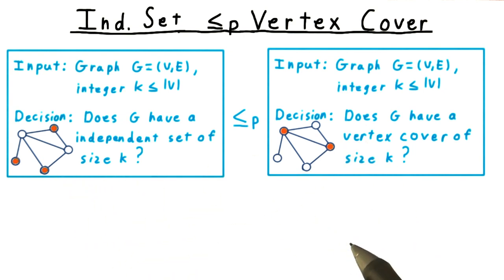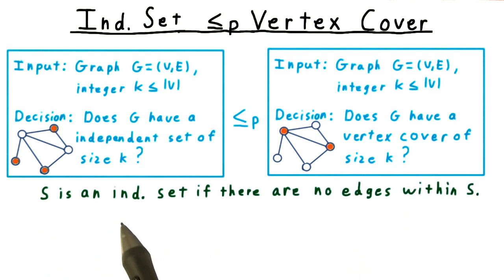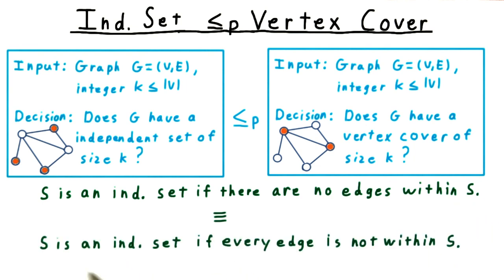Let's see if we can explain this. A set S is an independent set if there are no edges within S. By within, I mean that both endpoints are in S. That's equivalent to saying that every edge is not within S, or that every edge is incident on V minus S.